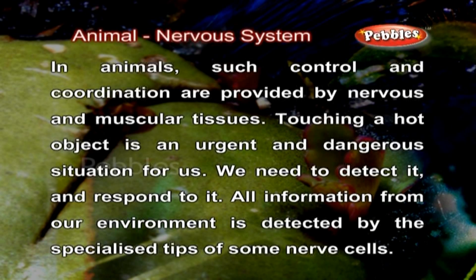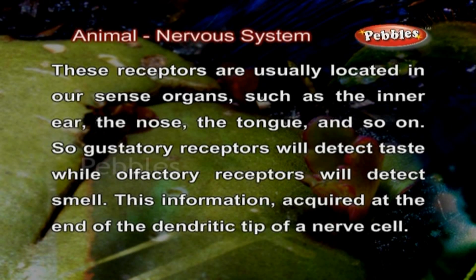Touching a hot object is an urgent and dangerous situation for us. We need to detect it and respond to it. All information from our environment is detected by the specialized tips of some nerve cells. These receptors are usually located in our sense organs such as the inner ear, the nose, the tongue and so on. Gustatory receptors will detect taste while olfactory receptors will detect smell. This information is acquired at the end of the dendritic tip of a nerve cell.